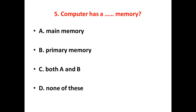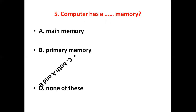Fifth bit: Computer has a dash memory. Option A, Main memory. Option B, Primary memory. Option C, Both A and B. Option D, None of these. The answer is Option C, Both A and B.